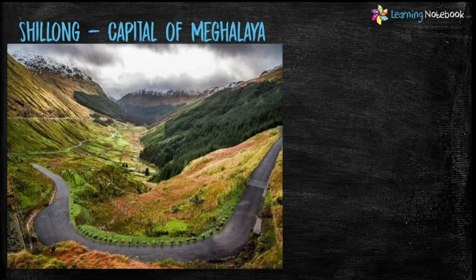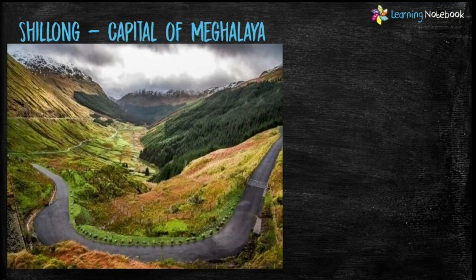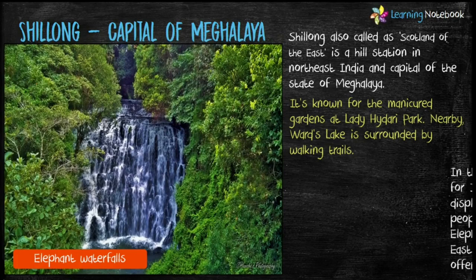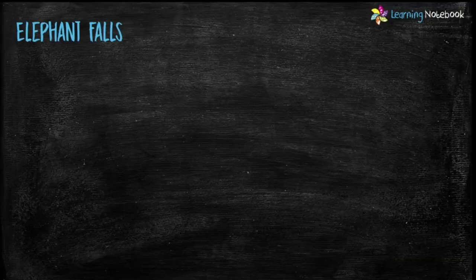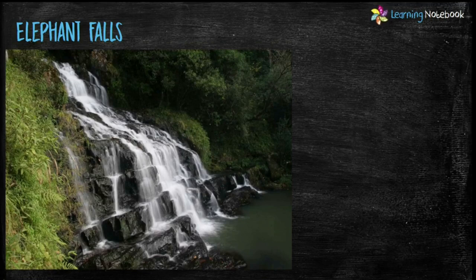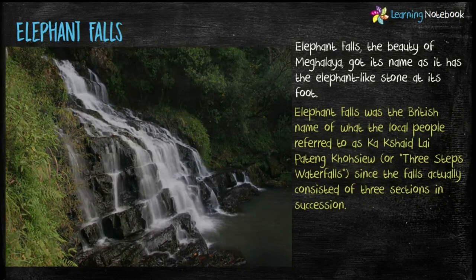Next famous place is Shillong, which is the capital of Meghalaya. Shillong is also known as the Scotland of the East and is a hill station. Next is Elephant Falls, located in Shillong. It got its name because it has an elephant-like stone at its foot.